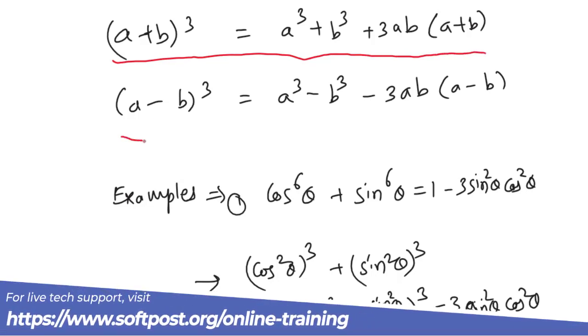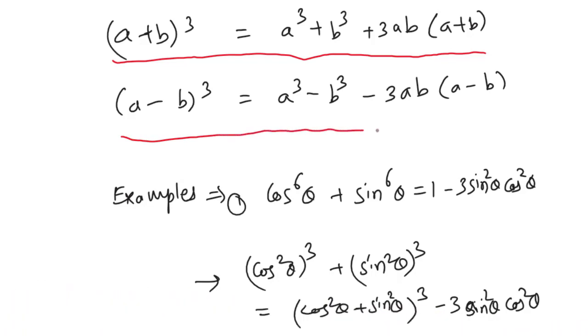The same way, (a-b)³ = a³ - b³ - 3ab(a-b).